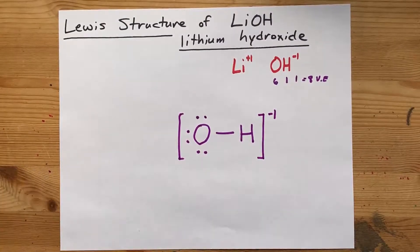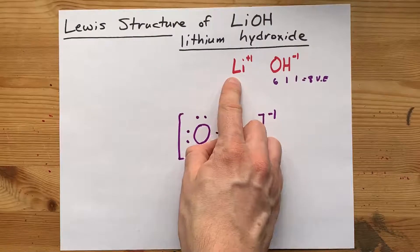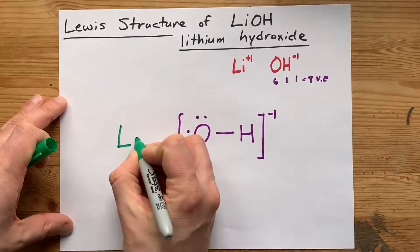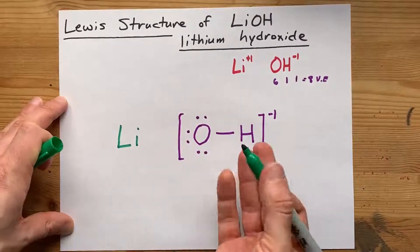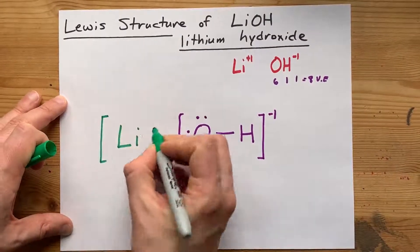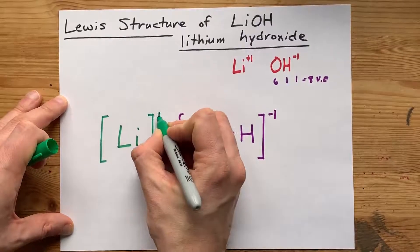How do you deal with lithium? Well, lithium here has a plus one charge. So lithium, which normally brings one electron with it, now no longer has that one electron. So draw it empty and give it a plus one charge.